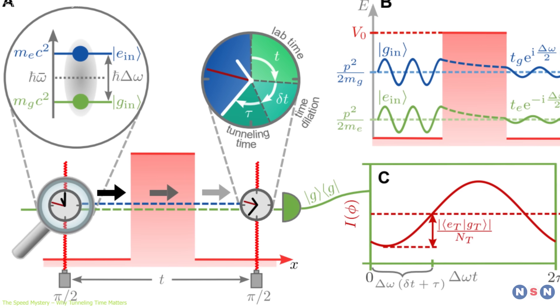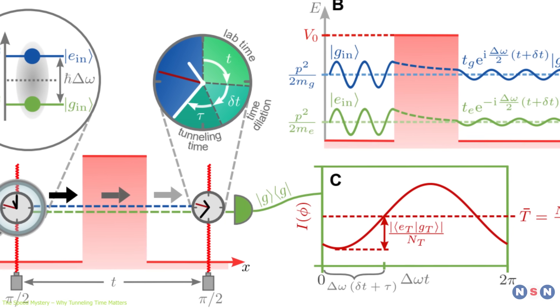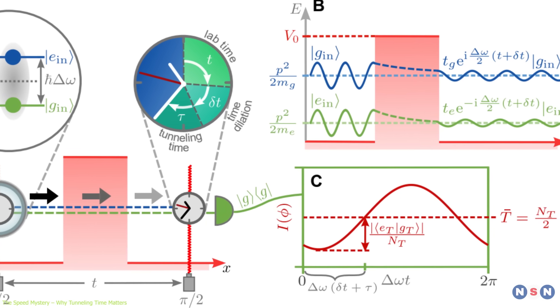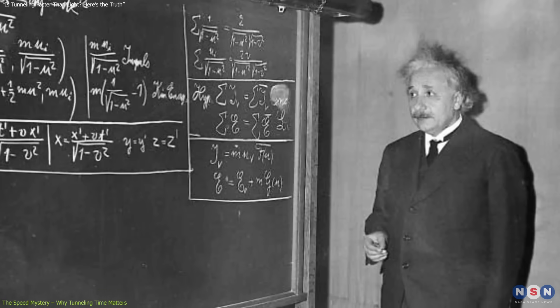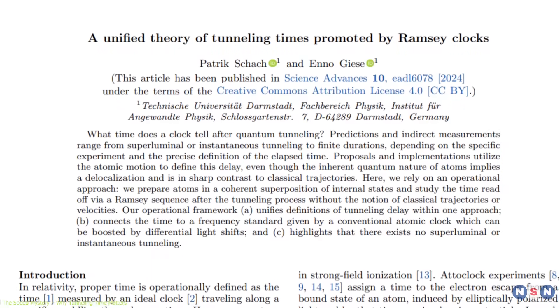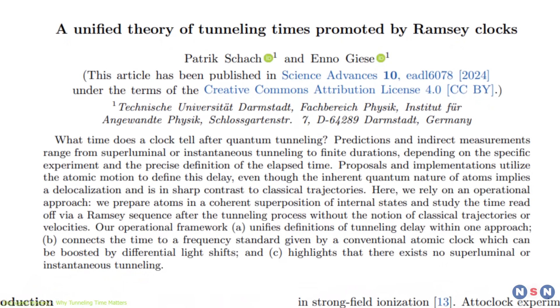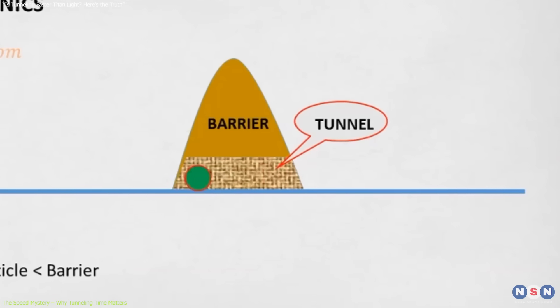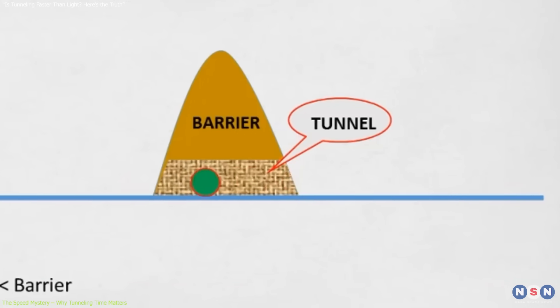Importantly, this method reveals a small but measurable delay, about 10 to the power of negative 26 seconds, refuting claims of instantaneous tunneling and preserving the sanctity of relativity. Schack and Giese's theory even unifies multiple previous definitions of tunneling time, such as Wigner phase time, dwell time, and Larmor clock time, into a single framework.